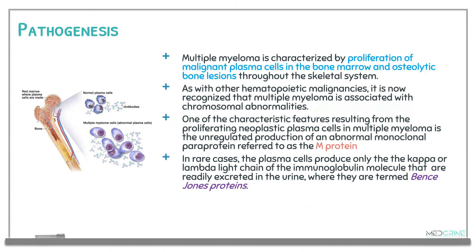In the pathogenesis of multiple myeloma, it is characterized by proliferation of malignant plasma cells in the bone marrow and osteolytic bone lesions throughout the skeletal system. It is associated with chromosomal abnormalities. A characteristic feature is unregulated production of abnormal monoclonal paraprotein known as the M protein. In rare cases, plasma cells produce only kappa and lambda light chains, which are excreted in urine — these are called Bence Jones proteins.